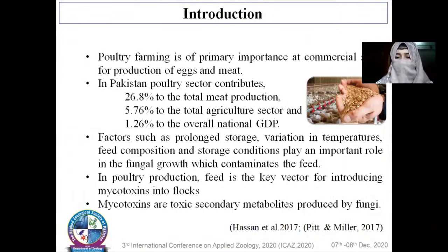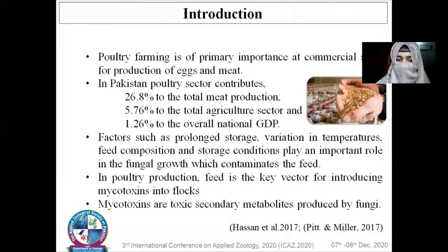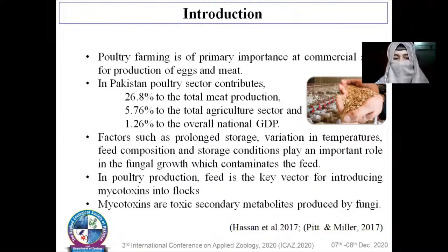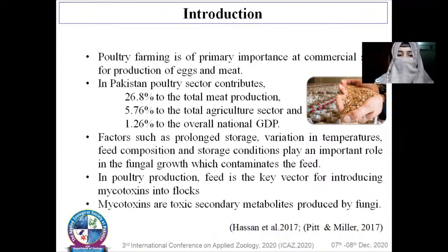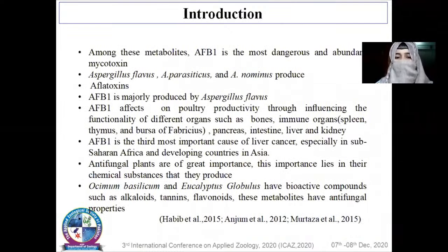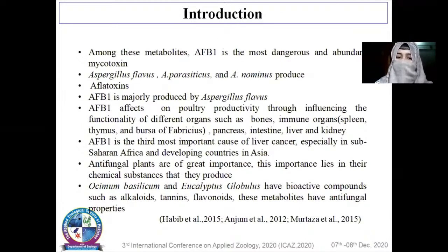Quality farming is of primary importance at commercial scale for production of eggs and meat. In Pakistan, it is the most dynamic sector which contributes 26.8% to total meat production, 5.76% to the total agriculture sector, and 1.26% to the overall national GDP. Feed stored throughout the year is a key vector for introducing mycotoxins into flocks. Mycotoxins are toxic secondary metabolites produced by fungi, and among these, aflatoxin B1 is the most dangerous and abundant mycotoxin, majorly produced by Aspergillus flavus.